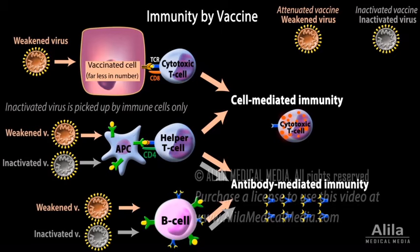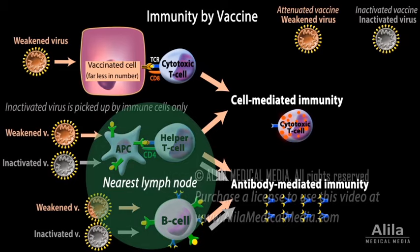The immune process can sometimes produce symptoms similar to a mild infection, even though there is none. As the lymph nodes near the injection site start producing antibodies, they may become swollen and tender for a few days.